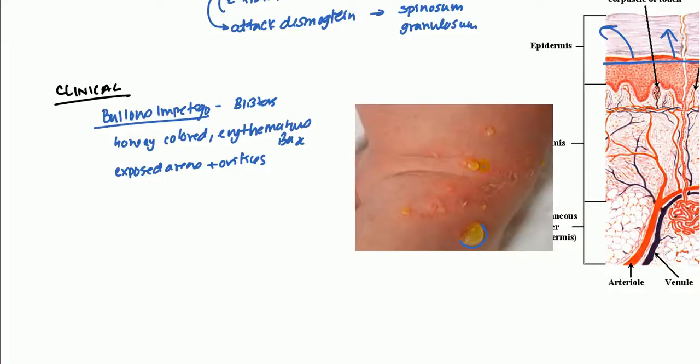Now, these blisters can rupture. And when they rupture, they leave a kind of a red base behind. And they can even, before they rupture, they can actually become very cloudy. They can become a cloudy vesicle or a cloudy bole and then actually rupture. And then they can rupture, leaving this redness behind.